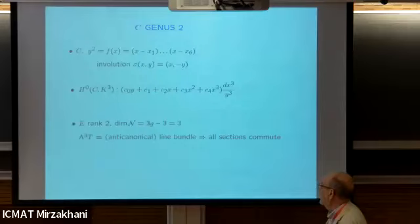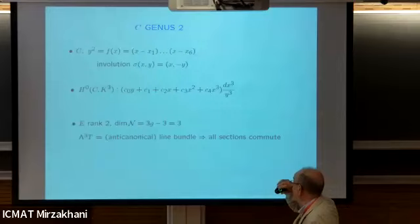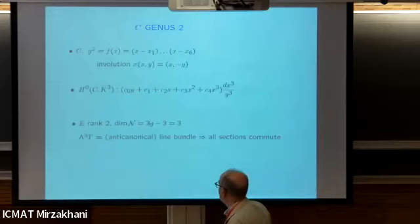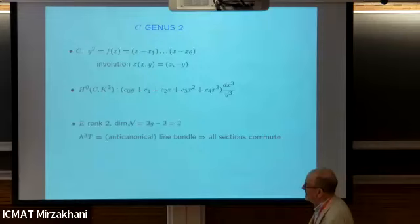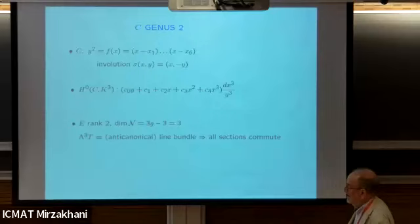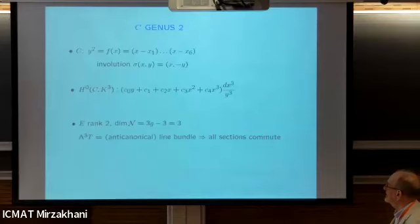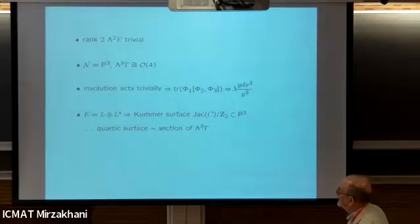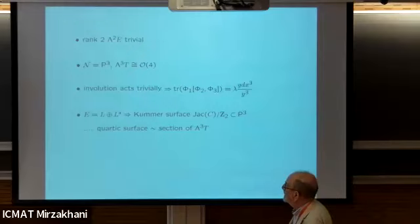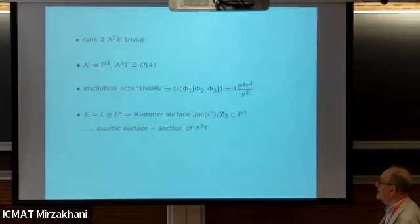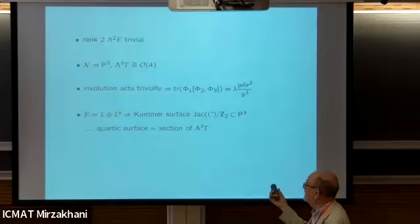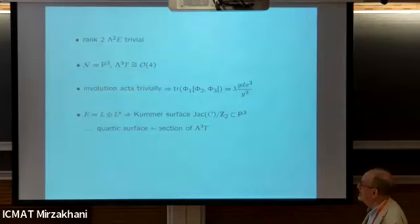For each - so we're looking for cubic differentials. In this case, the moduli space is only three-dimensional. The question about commutation is not an issue because our polyvector fields are all sections of the anticanonical bundle, and the Nijenhuis bracket takes you into degree five, which is zero here. If we look at the moduli space for rank two with trivial determinant, this is well-known as projective three-space P^3. The anticanonical bundle is O(4), so there are lots of polyvector fields - any quartic polynomial in four variables gives one.